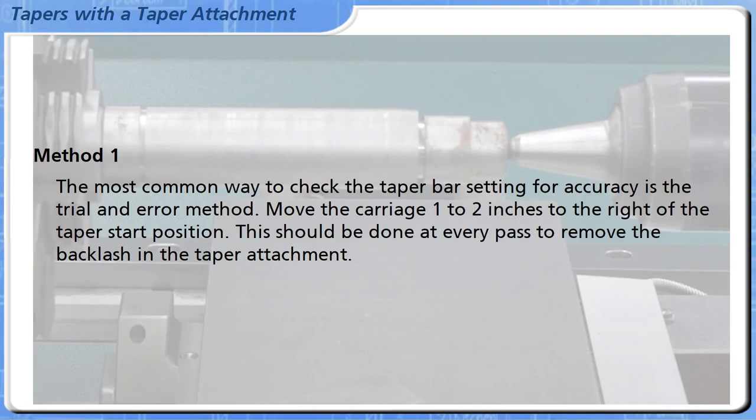Method 1: The most common way to check the taper bar setting for accuracy is the trial and error method. Move the carriage 1 to 2 inches to the right of the taper start position. This should be done at every pass to remove the backlash in the taper attachment.